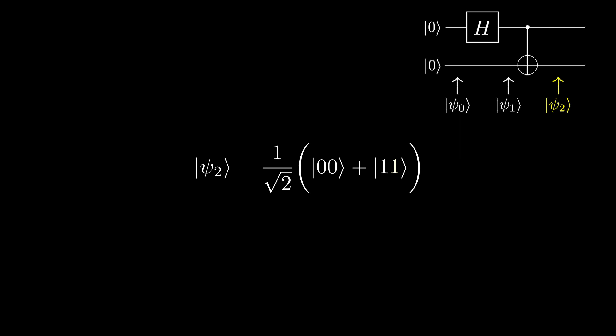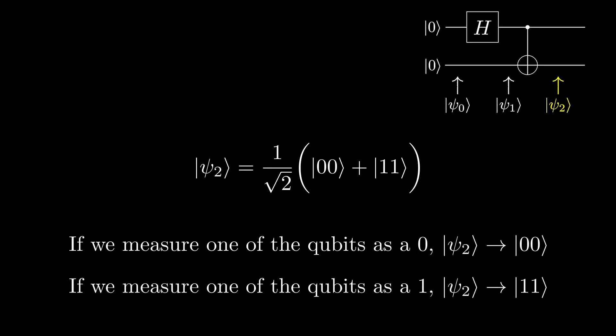Can you notice anything weird about this state? If we were to measure one of the qubits as a zero, the other would collapse into a zero, and if we were to measure a one, the other would collapse to a one.